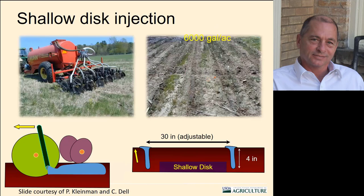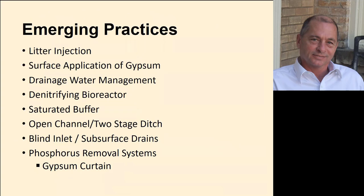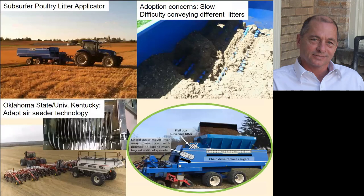We've compared many of these new technologies, and the one with some of the best performance is shallow disc injection. The disc injector does cause a fair amount of surface disturbance, but it controls ammonia and phosphorus losses best. We've worked with the Natural Resources Conservation Service to have this considered a conservation tillage measure. I'm going to go through some emerging practices we've been working with — we'll start with litter injection.